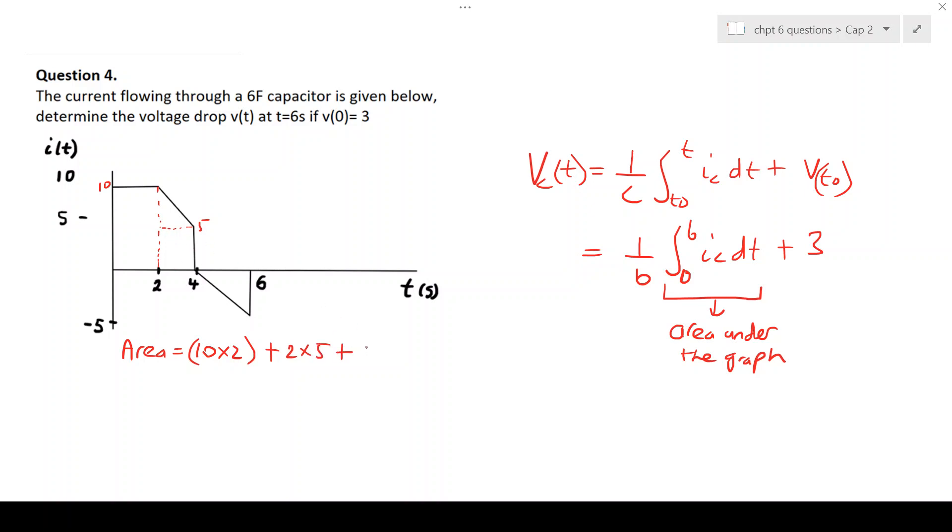Plus a half base times height. So it will be a half of 2 multiplied by 5, that's 10, will be 5, plus half, 6 to 4 will be 2, times the height here.